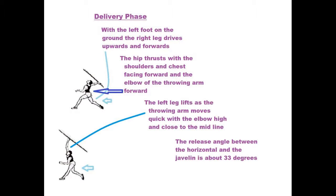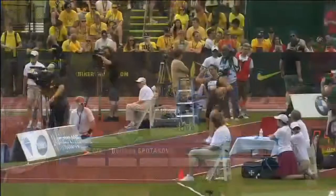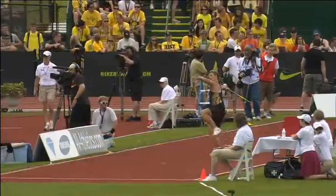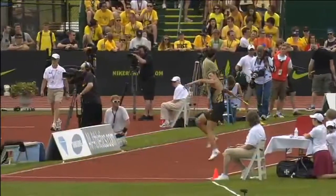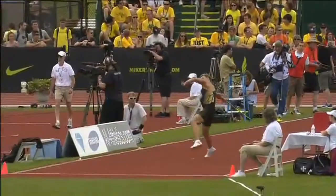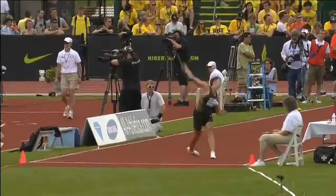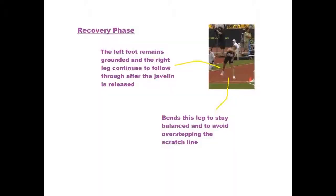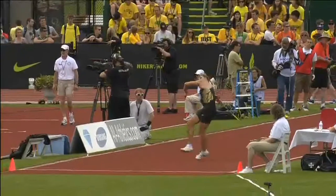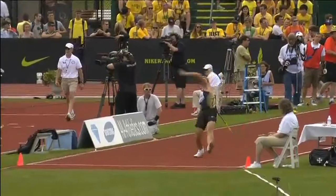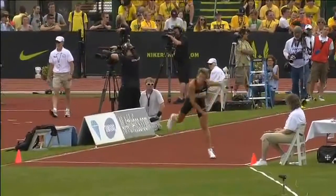Delivery phase: with the left foot on the ground, the right leg drives upwards and forwards. The hip thrusts with the shoulders and chest facing forward, and the elbow of the throwing arm leads forward. Recovery: the left foot remains grounded and the right leg continues to follow through after the javelin is released.